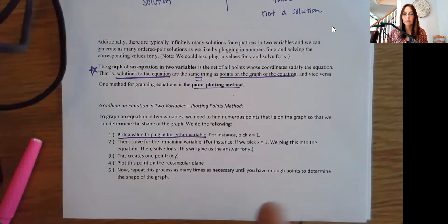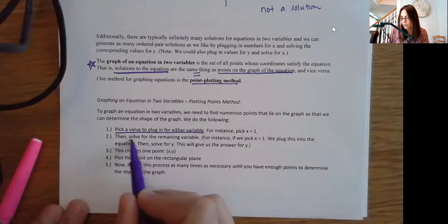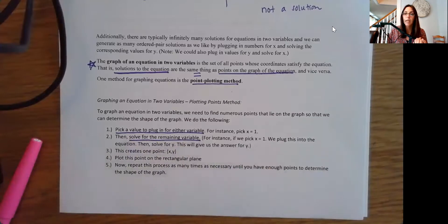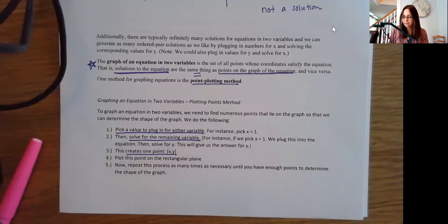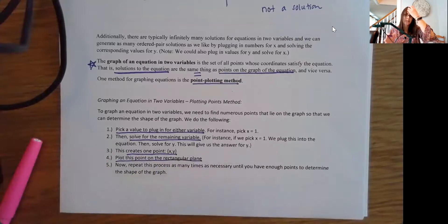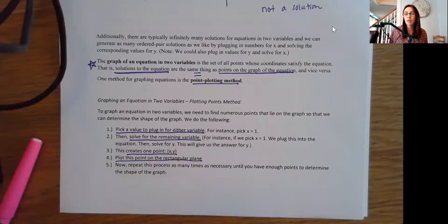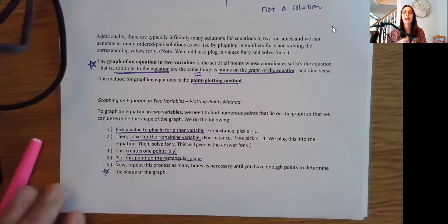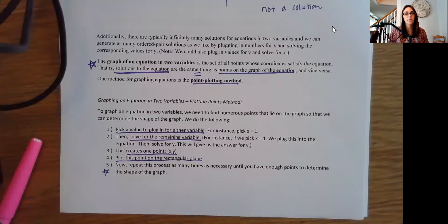To graph using the plotting points method, you pick a value to plug in for either variable — for instance, x = 1. You plug it into the equation and solve for the remaining variable, creating one point to plot on the plane. The more complicated the equation, the more points you'll need. For a linear equation you really only need two points, but for curves you need many more. You repeat this process until you have enough points to determine the shape of the graph.